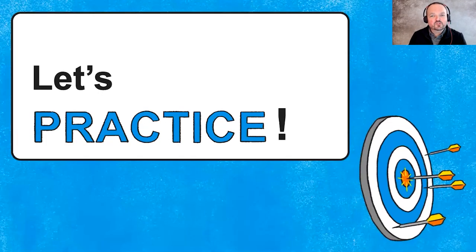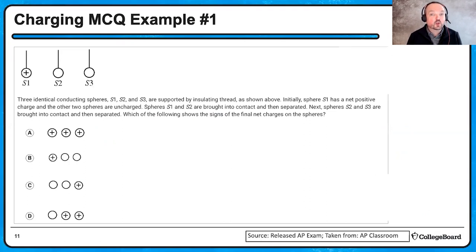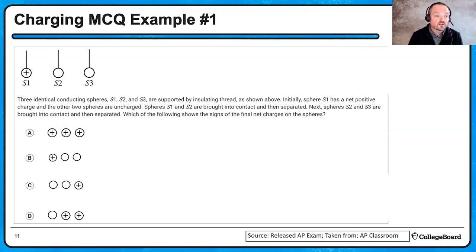Let's look at a couple of multiple choice questions from previous AP Physics II exams. In this situation, there are three identical conducting spheres — sphere 1, 2, and 3 — supported by insulating thread. Initially, sphere 1 has a net positive charge and the other two spheres are uncharged. Spheres 1 and 2 are brought into contact and then separated. Next, spheres 2 and 3 are brought into contact and then separated. Which of the following shows the signs of the final net charges on the spheres?